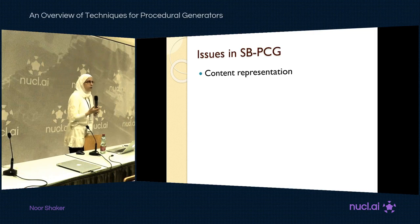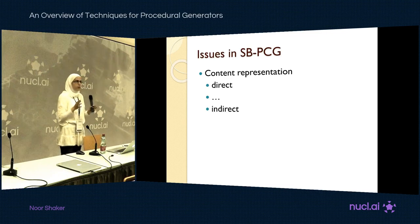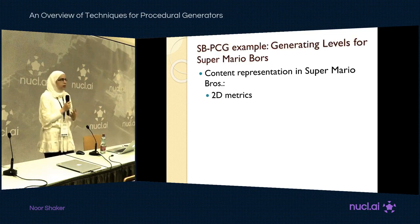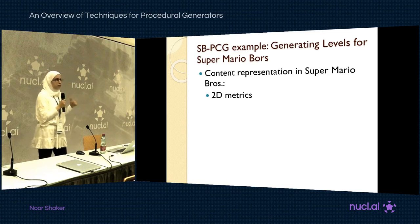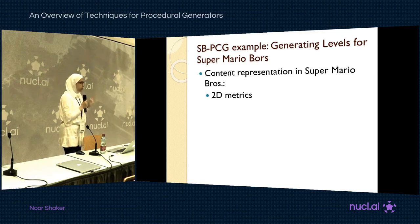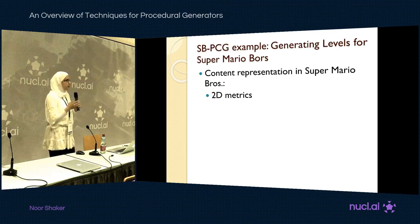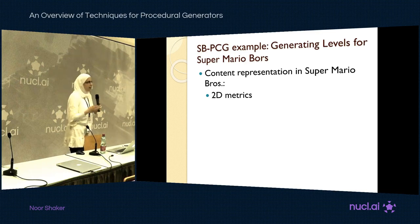I'll talk first about content representation. Methods range between very direct and very indirect. The basic direct method is simply a direct representation of the content. For Super Mario Bros — which has a lot of PCG research — you can represent a 2D level as a 2D matrix, encoding each cell with a unique number representing what is in that cell. However, this is not efficient because the method has a hard time searching for good or playable content.